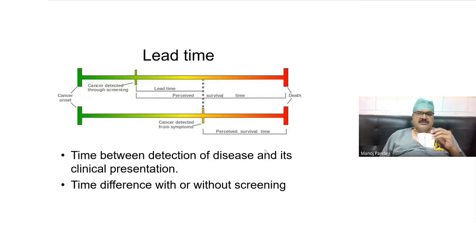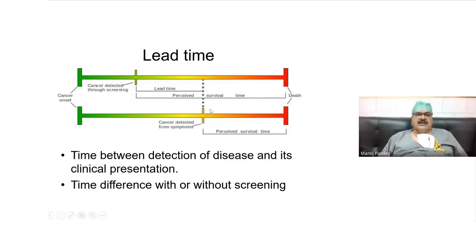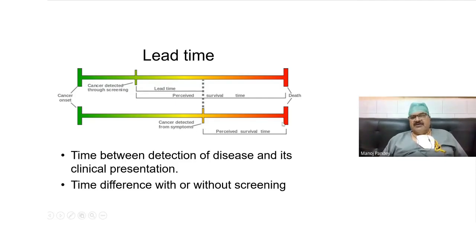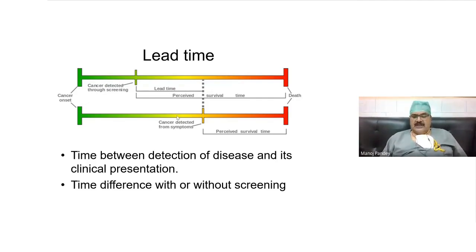There are certain terms which are used. One of them is called lead time. If you look at this line, it starts when the cancer starts and ends when death occurs. A normal patient is identified when they become symptomatic, and that is the survival time. Lead time is the time by which you detect the cancer early — if you detect it earlier, survival becomes longer and the time gained is the lead time. This is the time difference without or with screening.